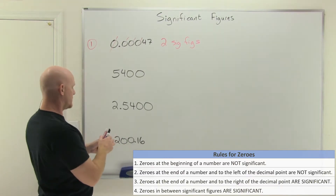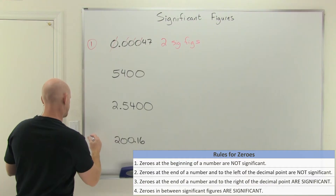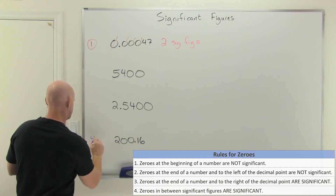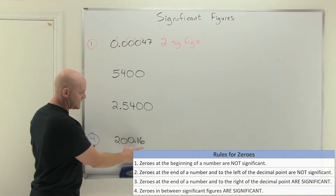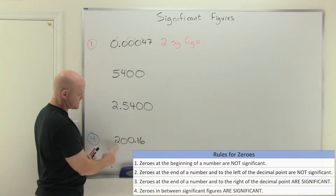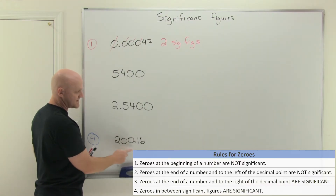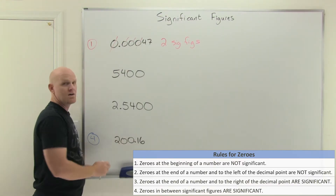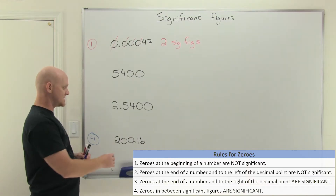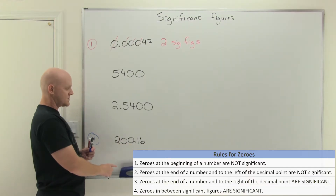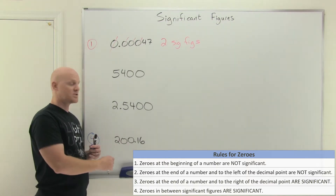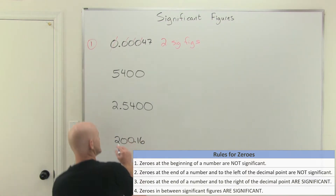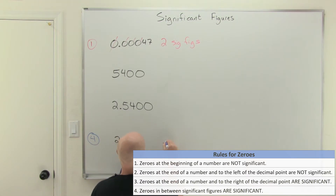Skipping to rule number four: zeros that are surrounded by significant numbers — sandwiched in between sig figs — are always significant. So for a number like 2,1006, these two zeros are between significant figures, so they're totally significant. The 2, the 1, and the 6 are definitely significant, and so are the two zeros in between, giving this number a total of five sig figs.